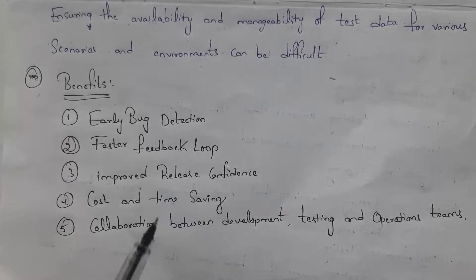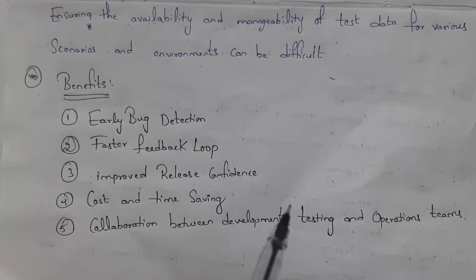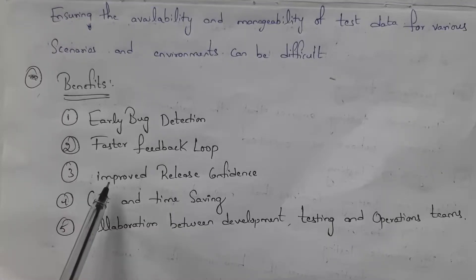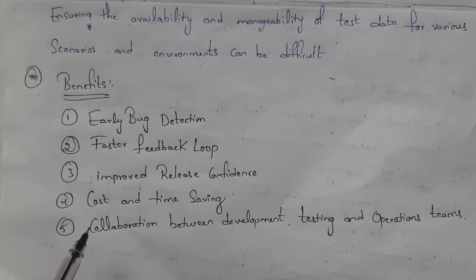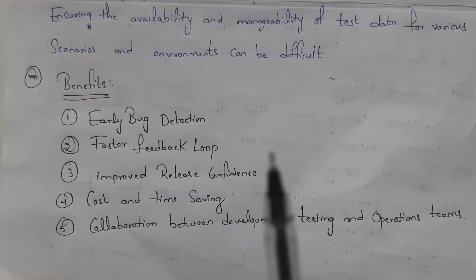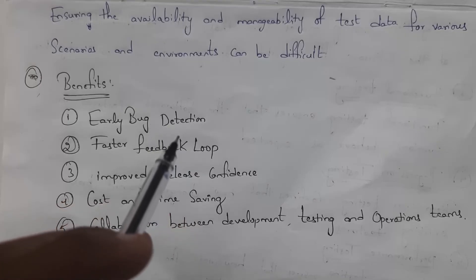The benefits of performing automation testing in DevOps are: first, early bug detection — errors can easily be found at an early stage. Second, faster feedback loops — after testing, if anything is not working well, immediate feedback is taken and new code is developed. Third, improved release confidence — if every test is successful, we get confidence to release the software. Fourth, cost and time saving — finding and fixing errors early saves cost and time. Fifth, collaboration between development, testing, and operations teams — all teams communicate and complete work together.